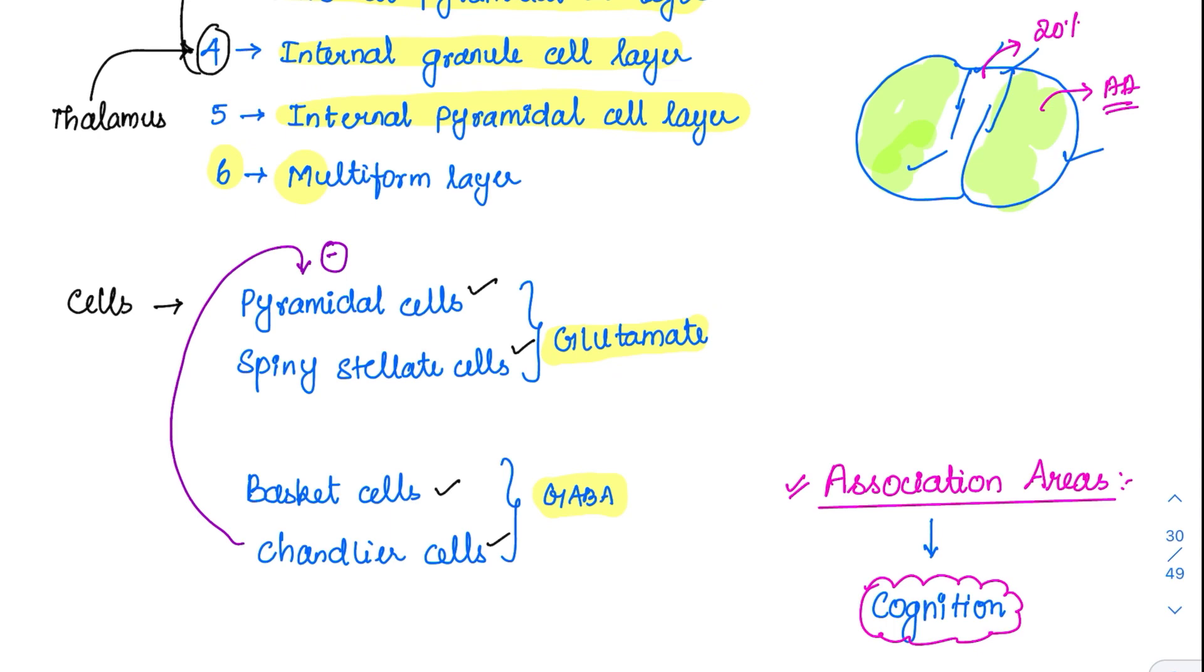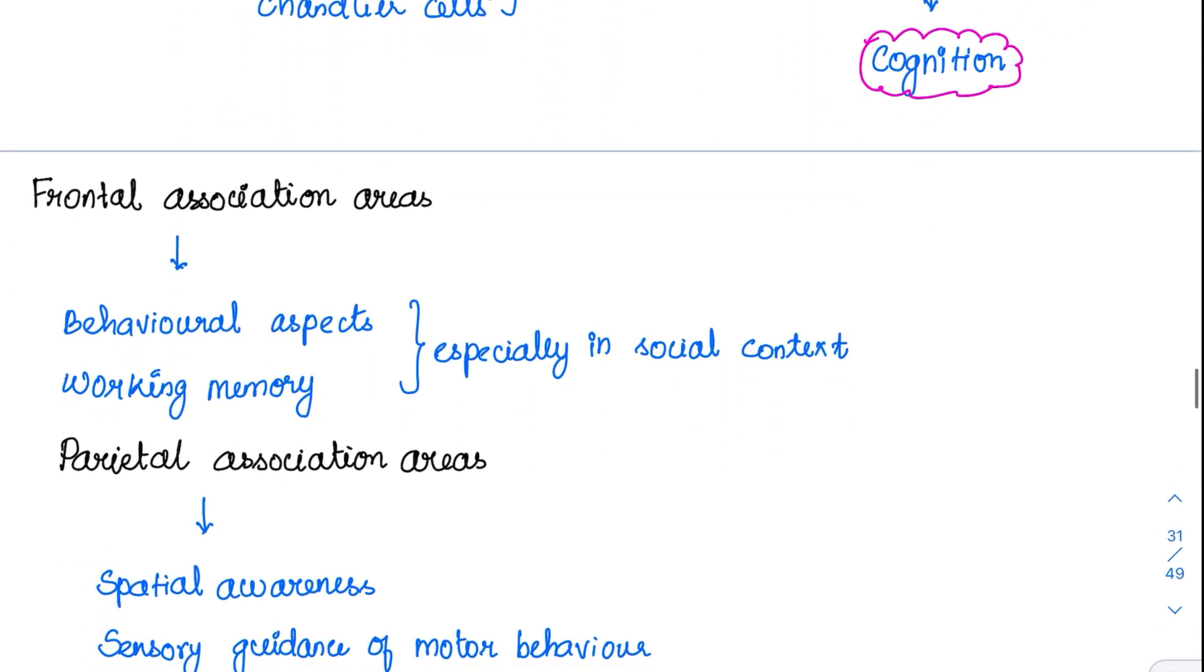Already we have seen in the sensory system, whenever the somatic sensory area is affected, the person is presented with hemi-neglect syndrome. Now specifically, which association area is involved in that, we will be going to see. So coming to the first association area, the frontal association area.